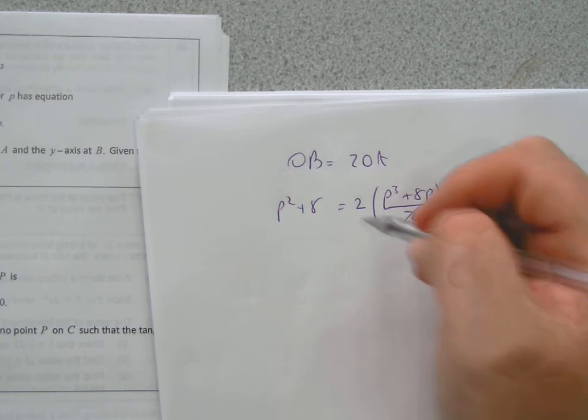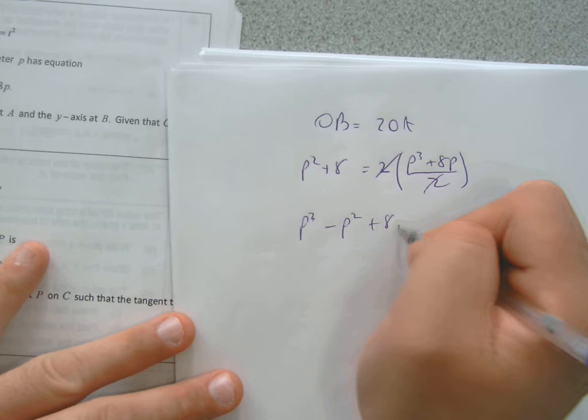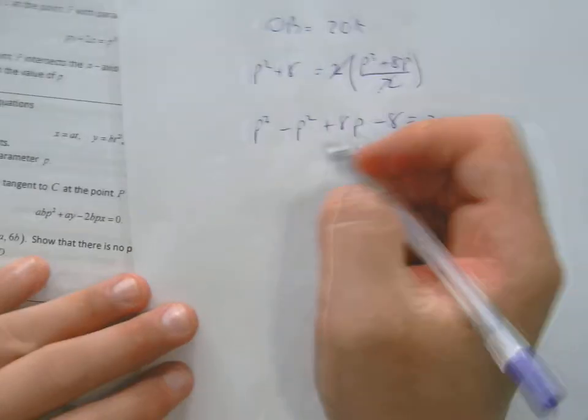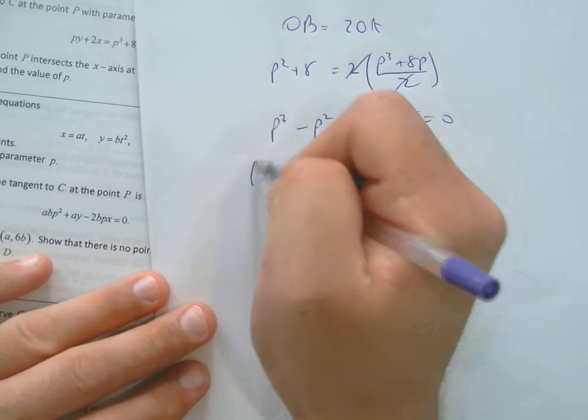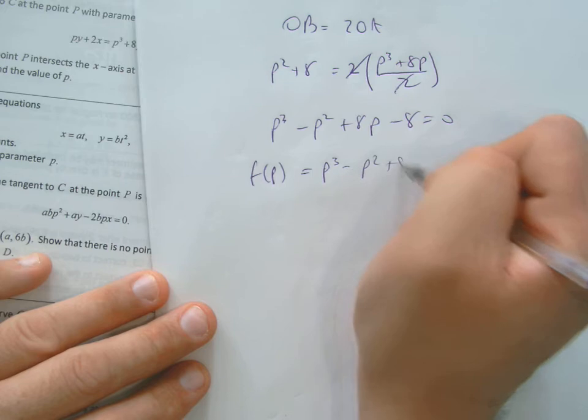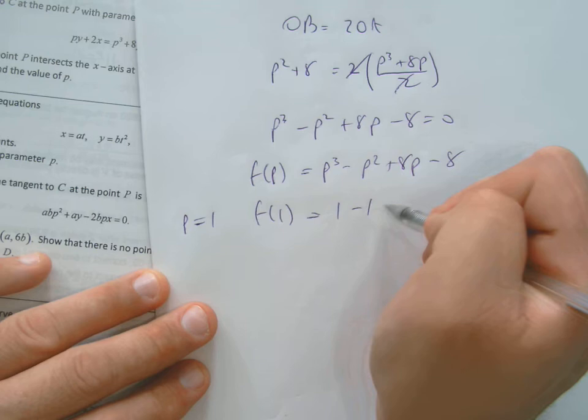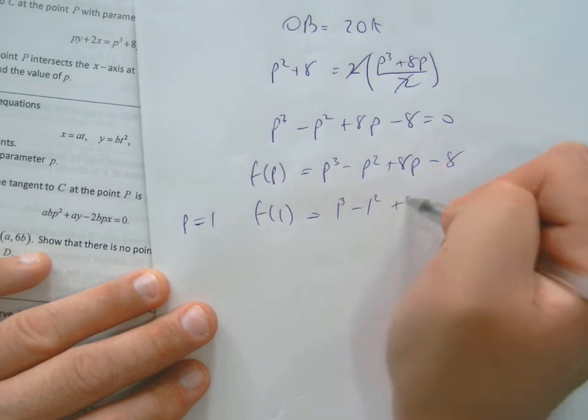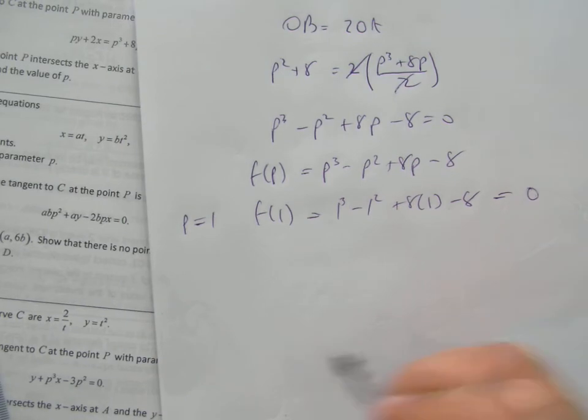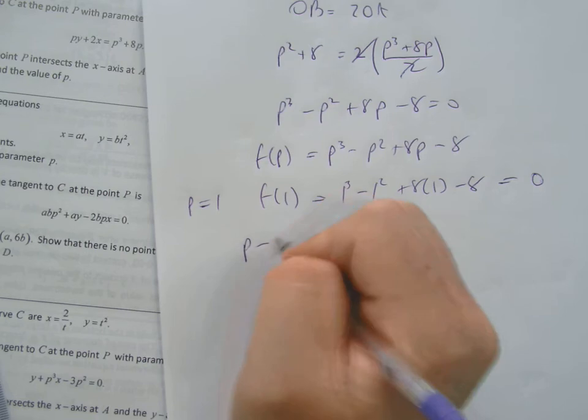In this case, the 2s will cancel, and you will get yourself a cubic equation like that. Which you need to factorize, because it's a cubic. So set p to equal 1, F of 1 equals 0. So straight away, that comes 0. So p minus 1 is a factor.